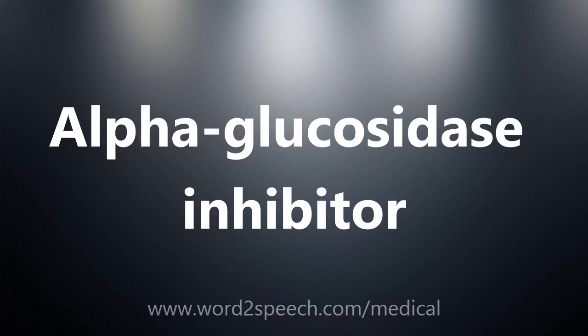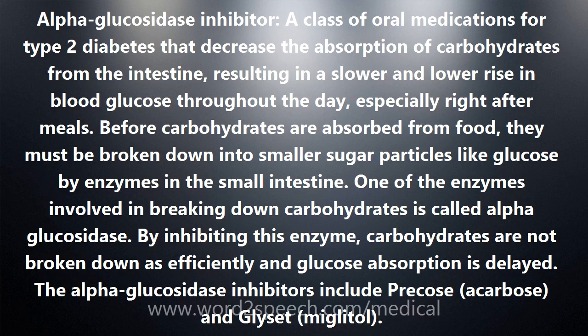Alpha-Glucosidase Inhibitor: a class of oral medications for type 2 diabetes that decrease the absorption of carbohydrates from the intestine, resulting in a slower and lower rise in blood glucose throughout the day, especially right after meals.